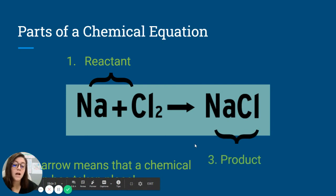And last but not least are our products. So hopefully you know if you have a product, that means you're making something. Those are our ending substances in our chemical equation. That's what happens when the reactants have gone through a chemical reaction and it creates a product.